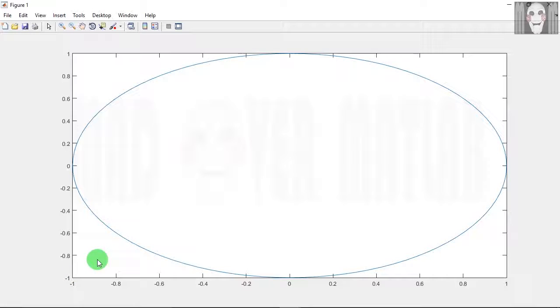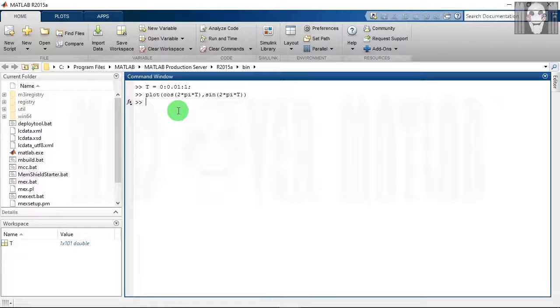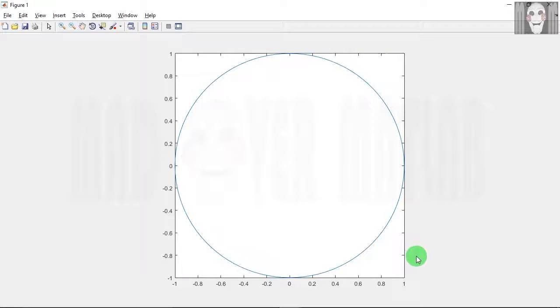So in order to make it proportionate, look like a circle, we have to use another command. Now as you can see, the x and y axis have been transformed in such a way that this looks like a circle.